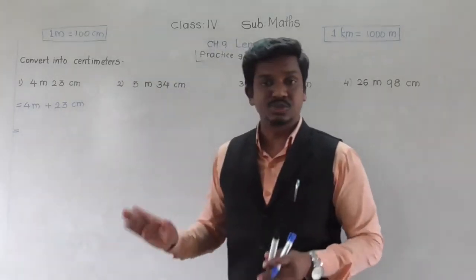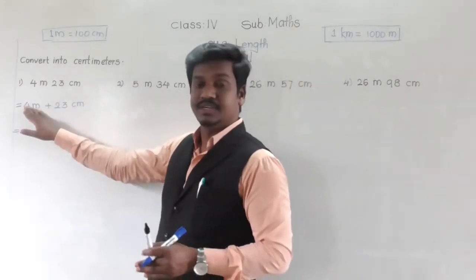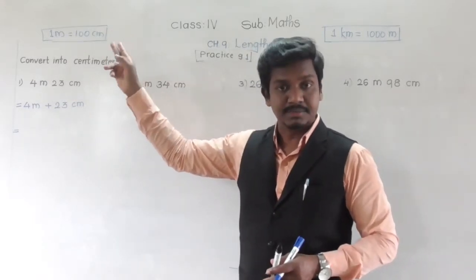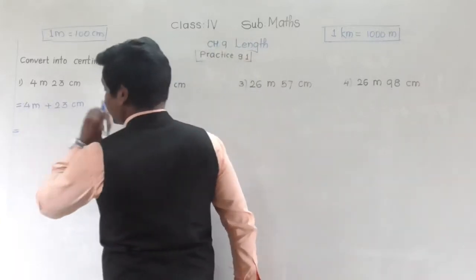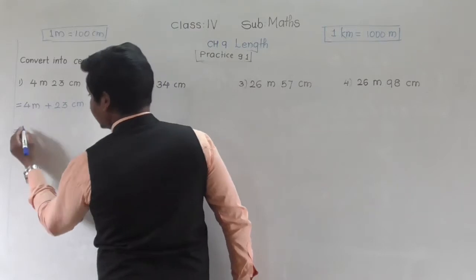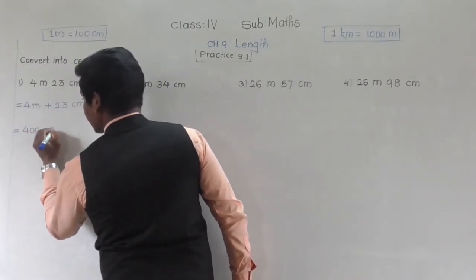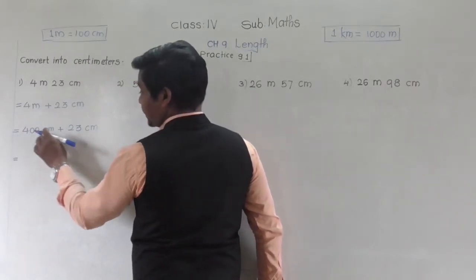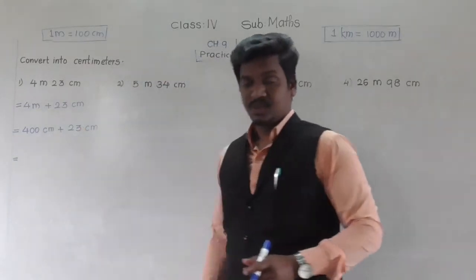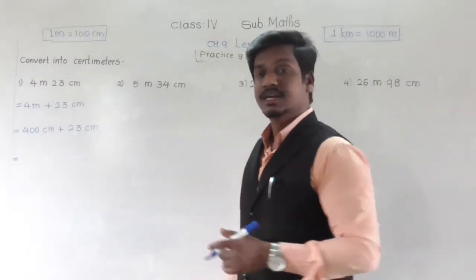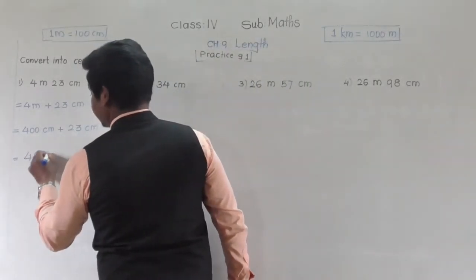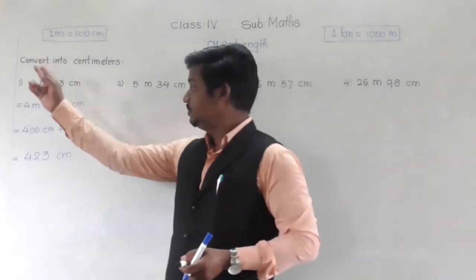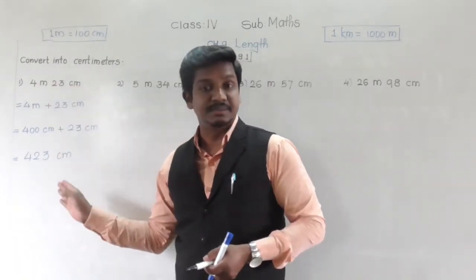The 23 is already in centimeters, so it need not be converted — it stays as 23 centimeters. We only need to convert 4 meters into centimeters. We know that 1 meter equals 100 centimeters, so 4 meters equals 400 centimeters. Now 400 centimeters plus 23 centimeters — both are centimeters so we add them: 400 plus 23 equals 423 centimeters. So 4 meters 23 centimeters equals 423 centimeters.